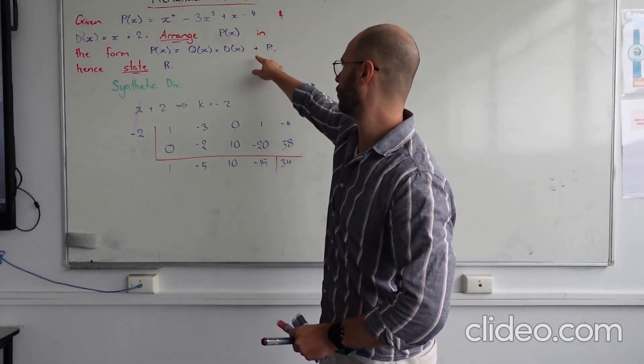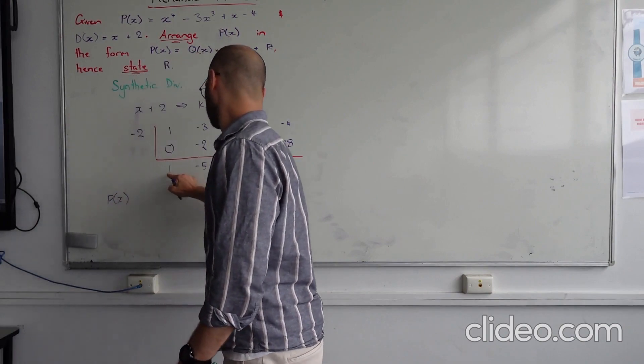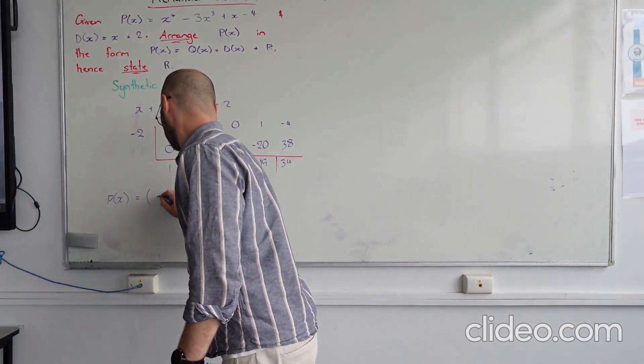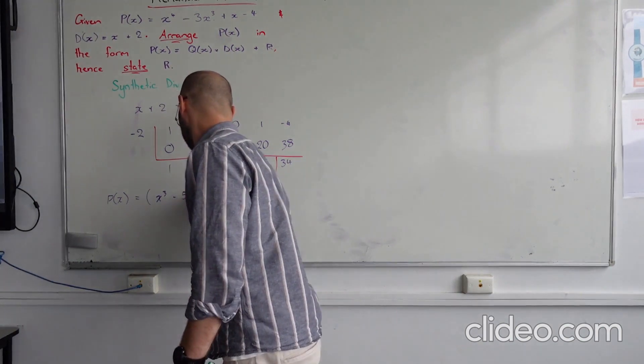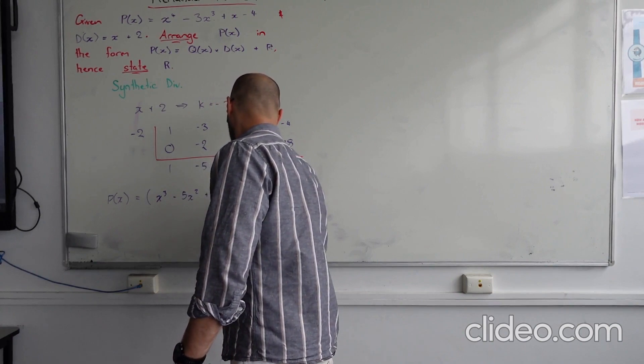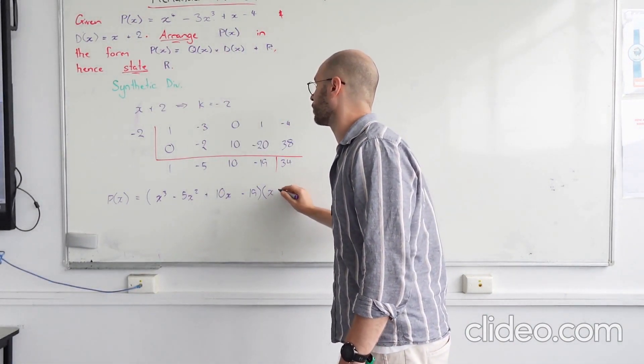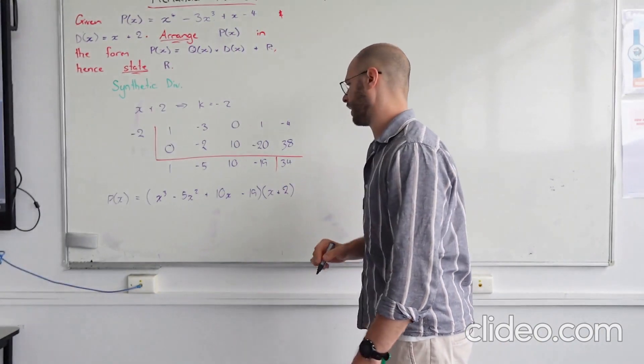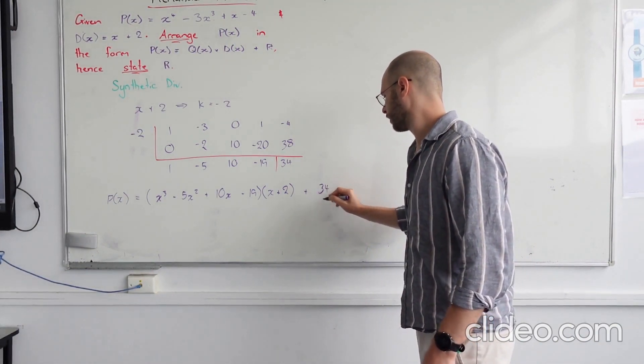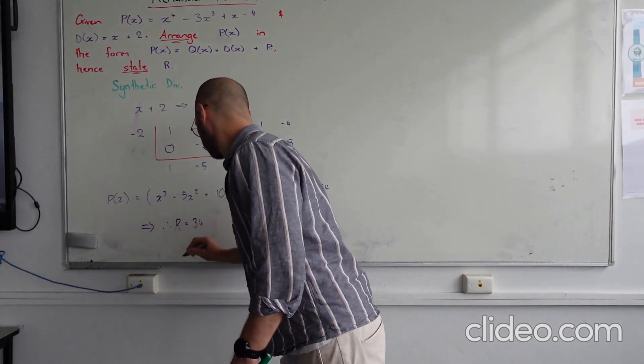So arranging P of x in the form over here. Whatever this is for our quotient. So 0, 1, 2, 3. So that's going to be x cubed minus 5x squared plus 10x minus 19. Multiplied by our divisor. x plus 2. And our remainder is going to be 34. Bingo. Hence... 34.